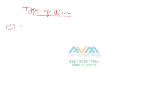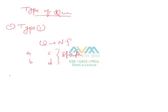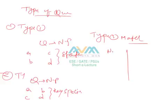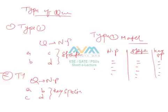Before starting this lecture, let us discuss what kind of questions can be asked from this topic. Type one: the name of a particular national park will be given and you must identify the correct state. Type two: a national park name will be given and you must identify the species belonging to it. Type three: a match-the-column question where four to five national parks are given on one side and you must match them with states or key species in the second column.